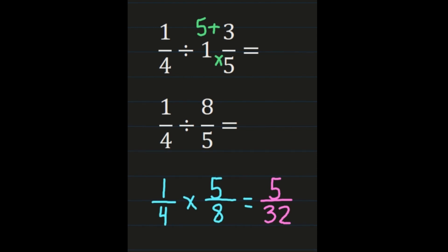5 and 32 don't share any common factors, so you can't simplify. 5 thirty-seconds is your final answer.